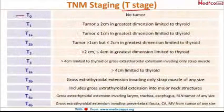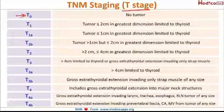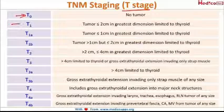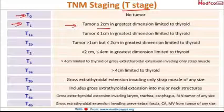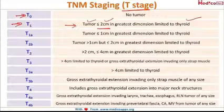Starting with T0 stage — T0 stage is no tumor. Then comes the T1 stage. T1 stage is when the size of the tumor is less than or equal to 2 centimeters, which is limited or within the thyroid gland. The tumor is 2 centimeters and within the thyroid gland.